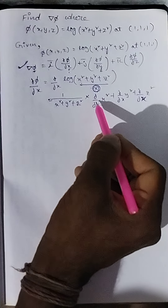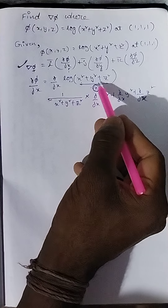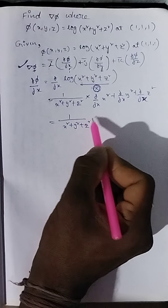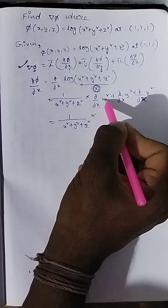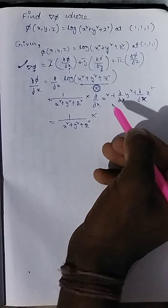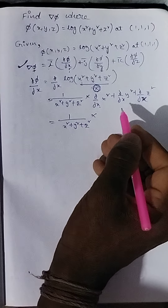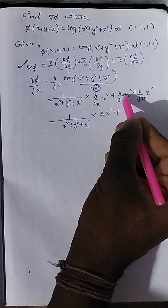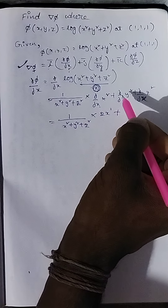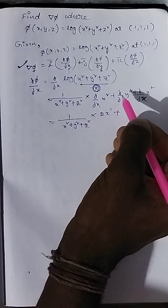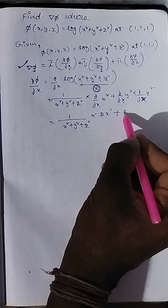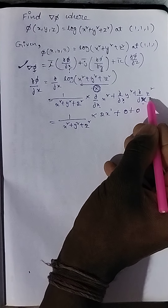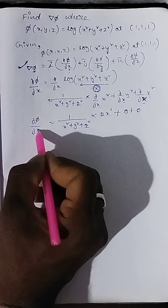Now differentiating each term partially with respect to x: ∂/∂x of x² = 2x using the power rule (n·xⁿ⁻¹, so 2·x²⁻¹ = 2x). Then ∂/∂x of y² = 0 since y is treated as constant with respect to x. And ∂/∂x of z² = 0 since z is also constant with respect to x. So ∂φ/∂x = 2x / (x² + y² + z²).